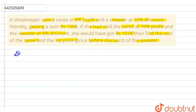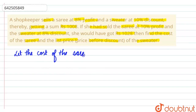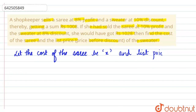What we'll do here: let the cost price of the saree be x, and list price of sweater — that is the price before discount — be y.